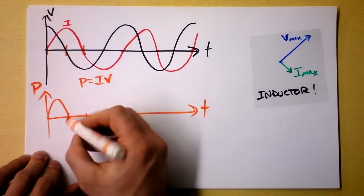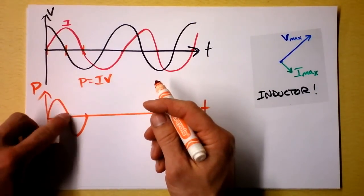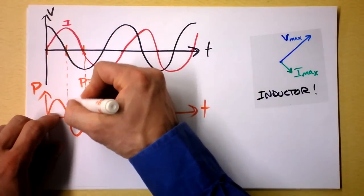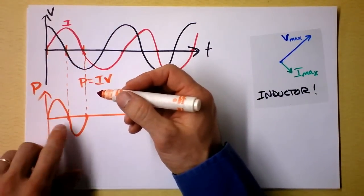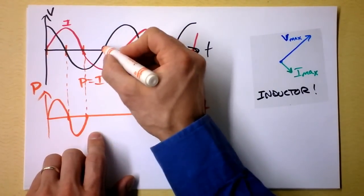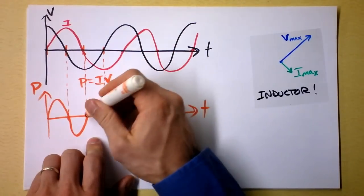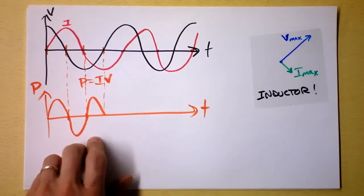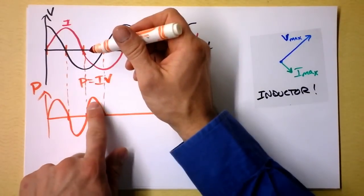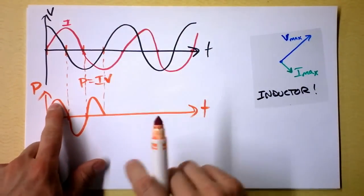Negative power means energy is leaving the inductor. Here we're putting energy into the inductor — power delivered is positive — then a moment later energy leaves the inductor and it gives that energy back to the power supply. Then we have both negative current and negative voltage, so we're putting energy back into the inductor again. The field is going the other direction, but we're storing real energy in the inductor.